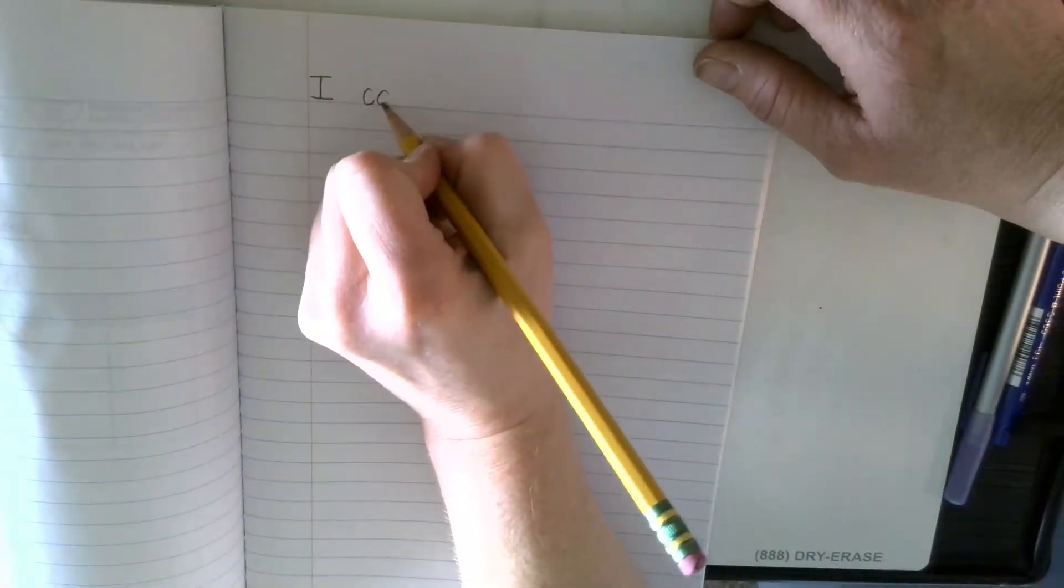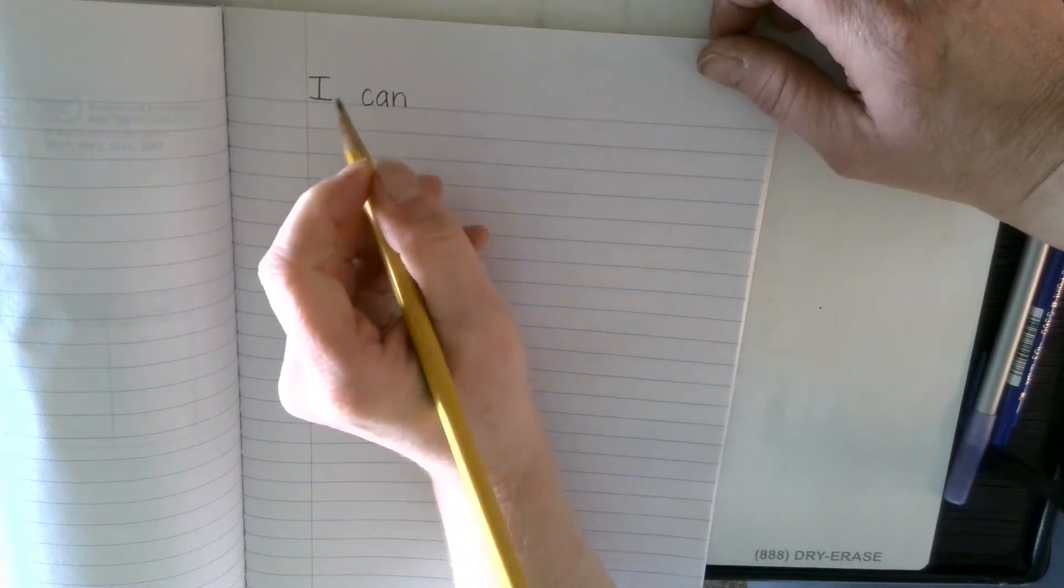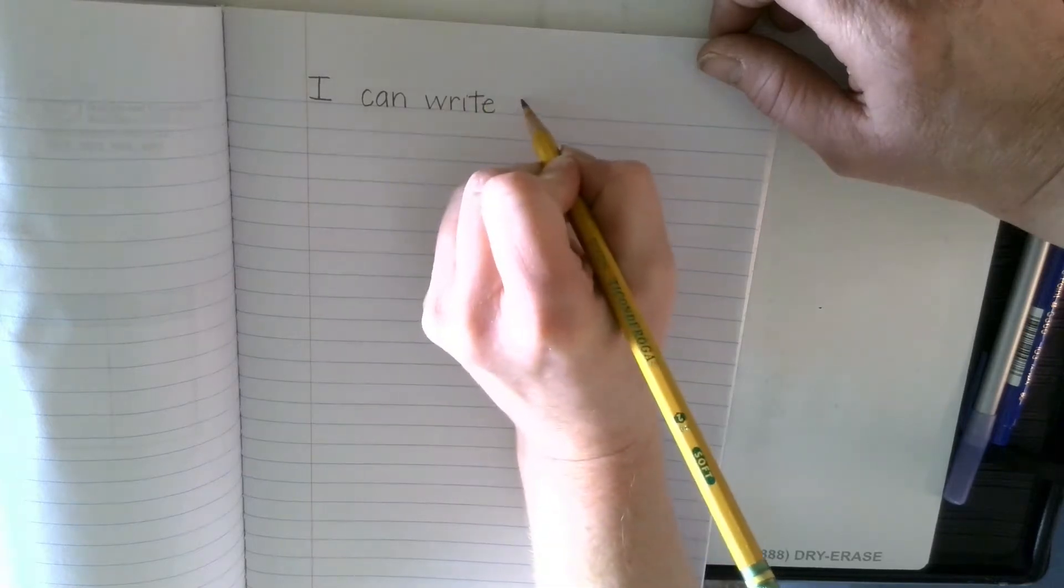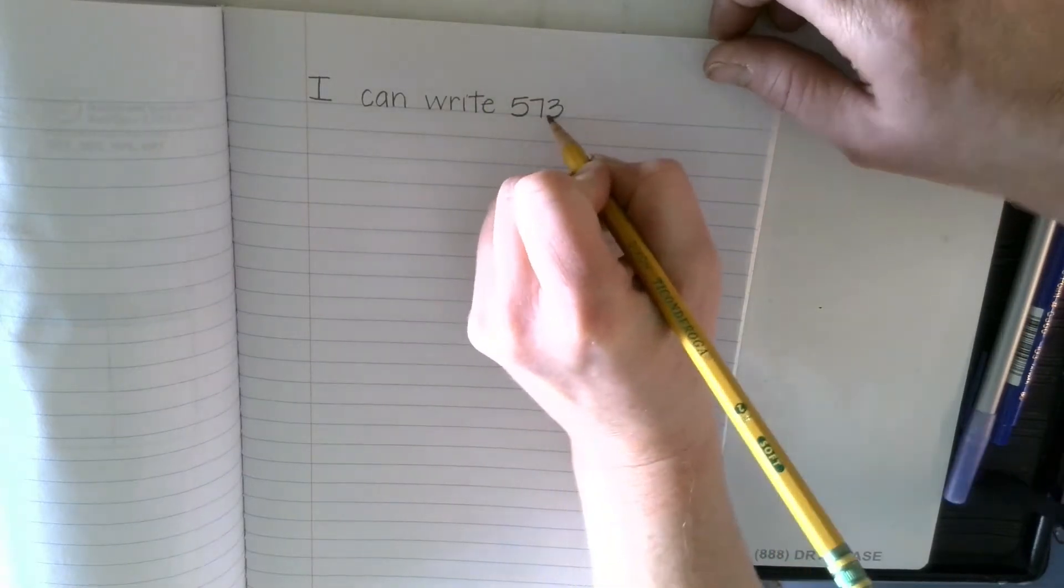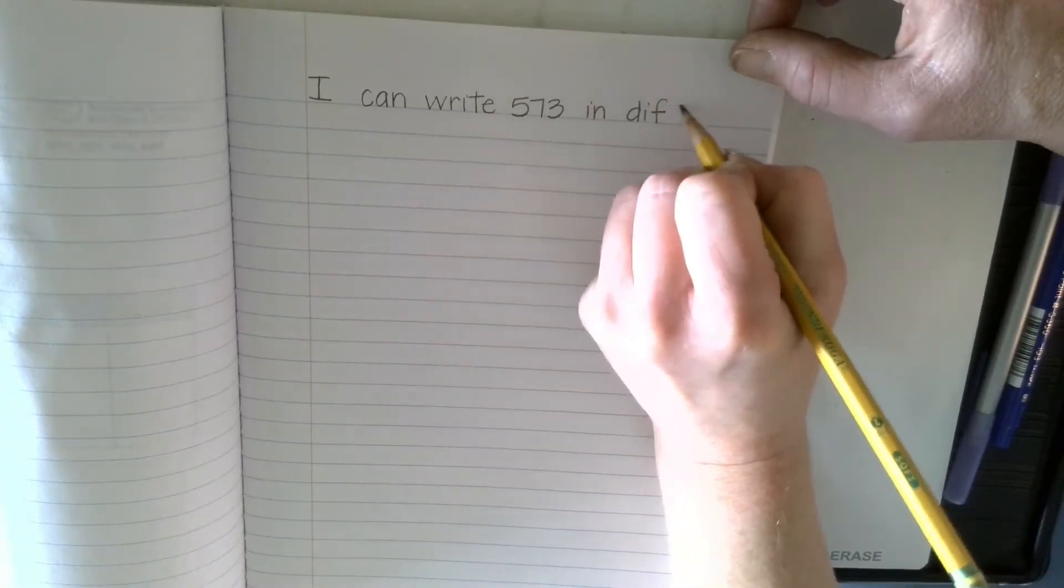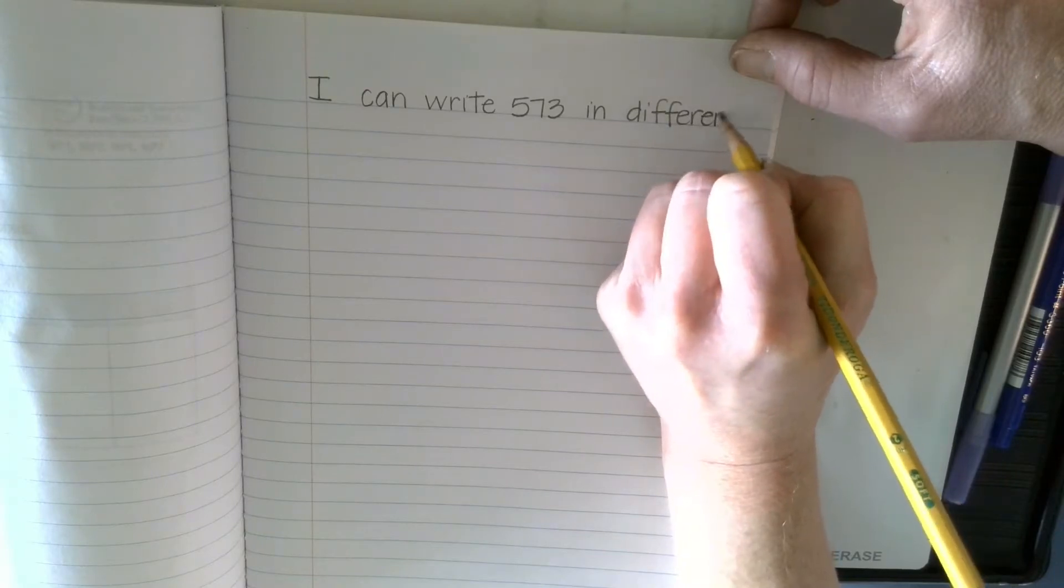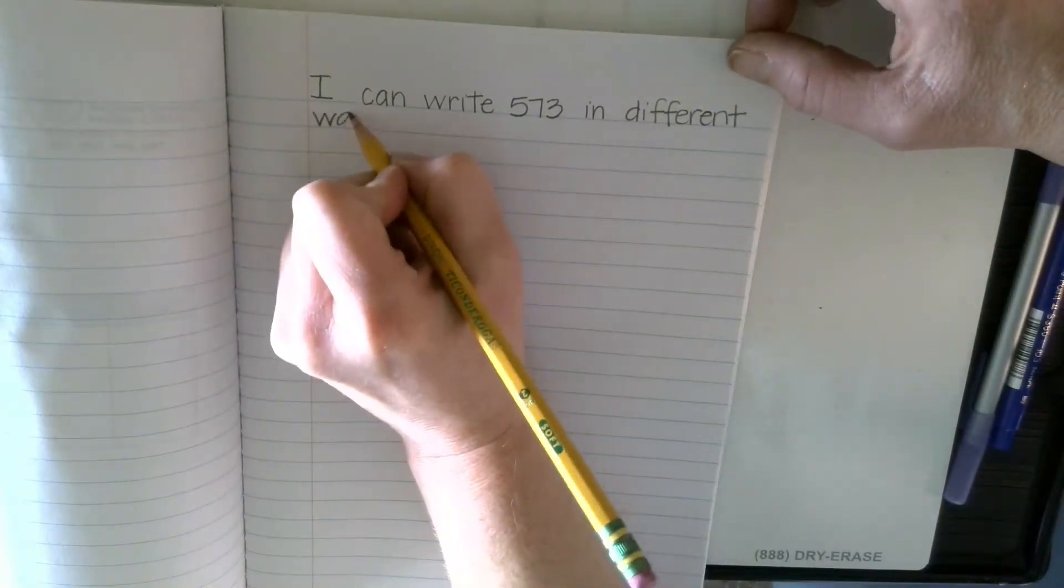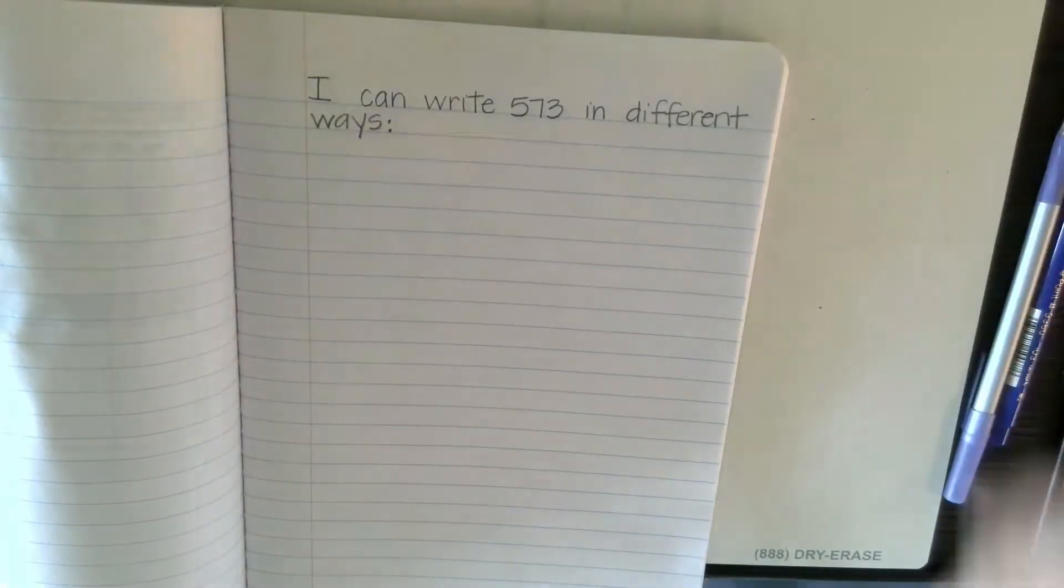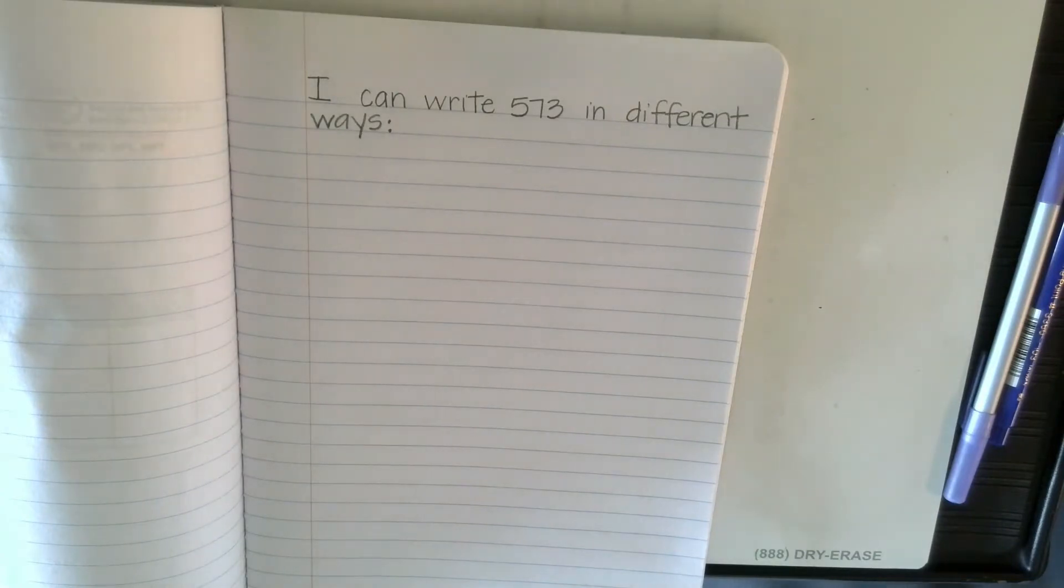So at the top we're going to write, it would help if you could see it, I can write 573 in different ways. Then I'm going to skip one line.